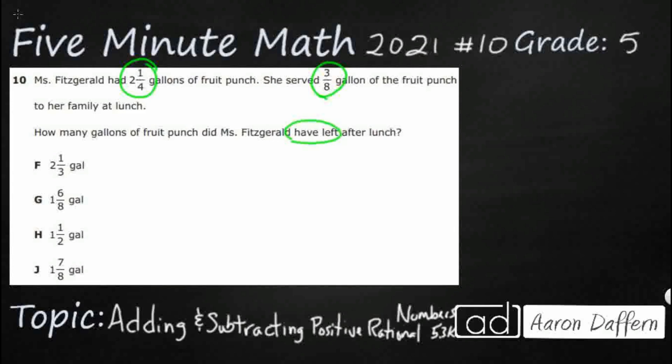So we can draw a real quick strip diagram to make sure that we are using our correct operation here. So it looks like her total is going to be 2 1/4 gallons.